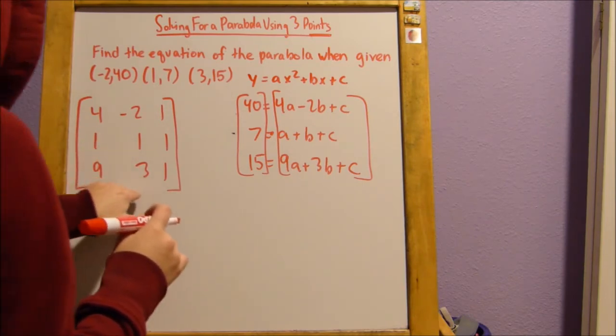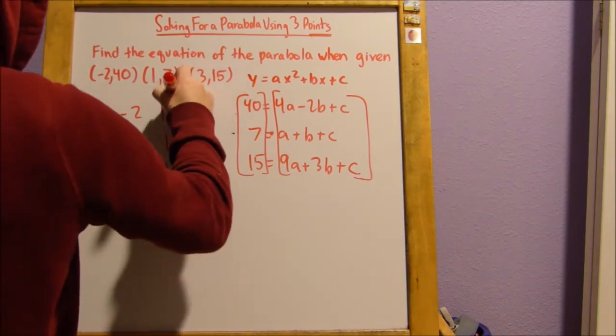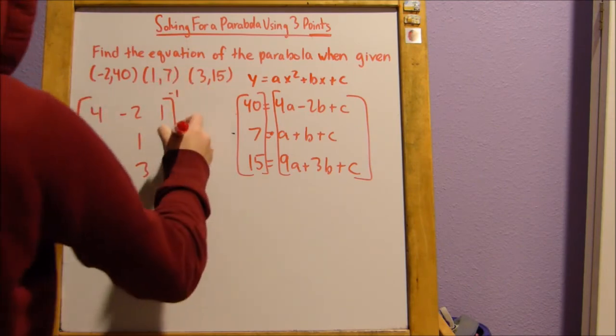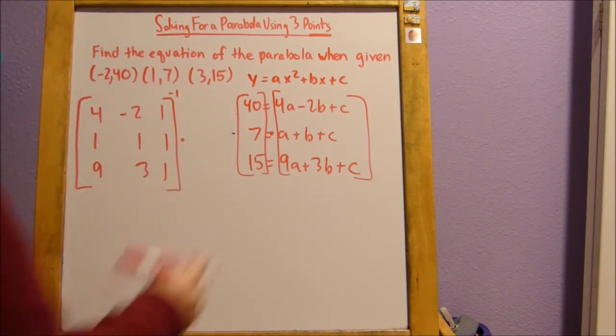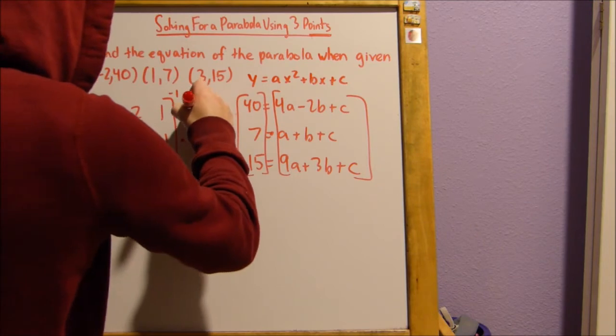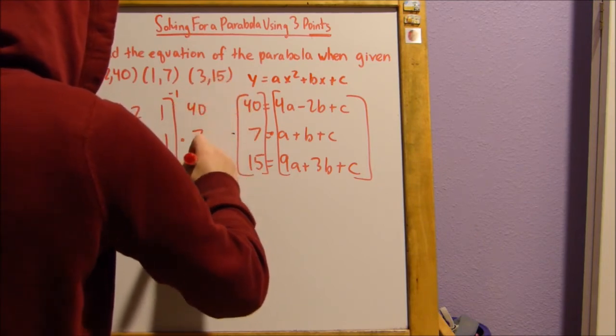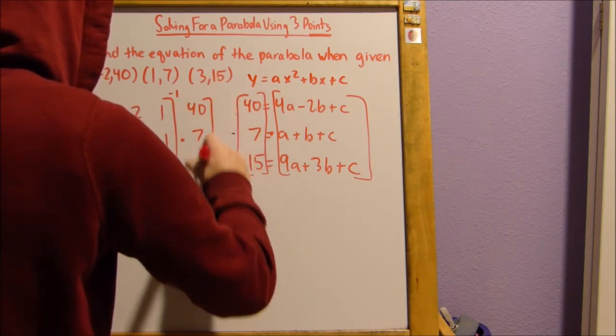Now that we have this matrix, we're going to take the inverse of it. And then we're going to multiply it by this matrix here: 40, 7, 15.